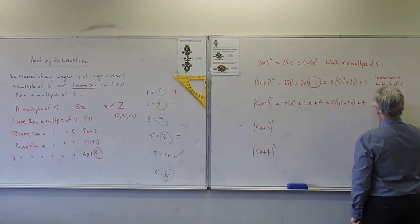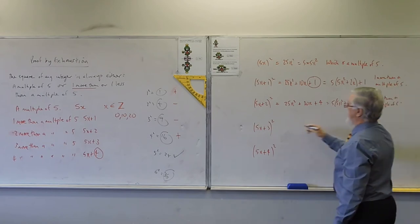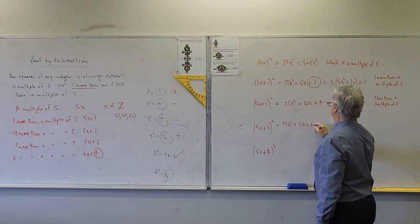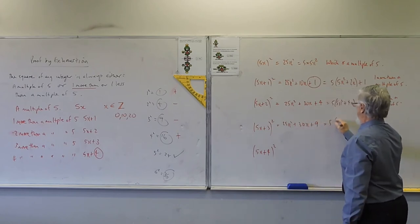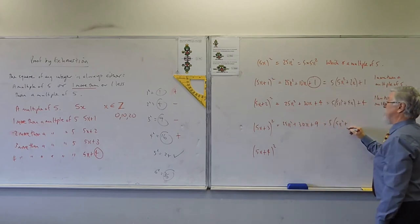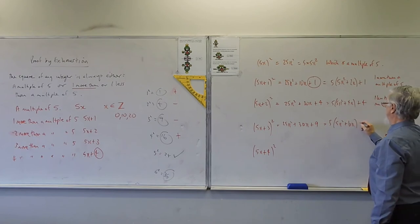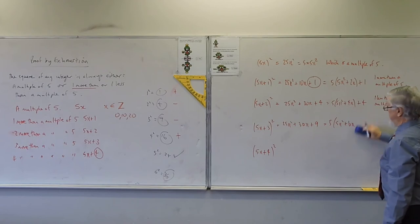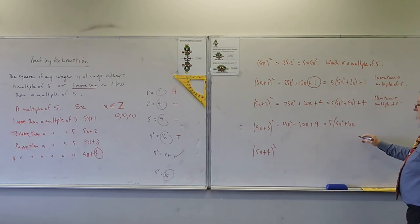Are we? You all right? 25X squared, that's 30X and that's 9. So you've got 5 outside of the 5X squared plus 6X. Oh, I should have done that. Should have gone a step further. Or do we? What if I wrote that?